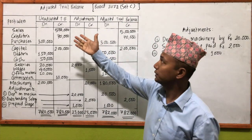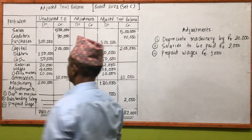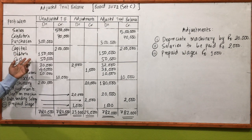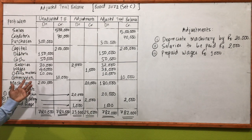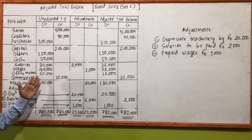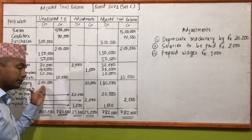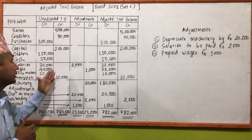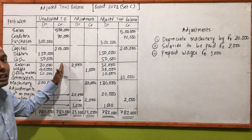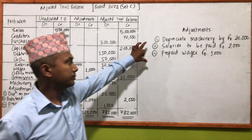We have another question — an unadjusted trial balance with sales, creditors, purchase, capital, debtors, cash, salaries, wages, office material, commission, and machinery. In debit we have expenses, losses, and assets. In credit we have income, gain, profit, capital, and liability. Creditors go to credit.